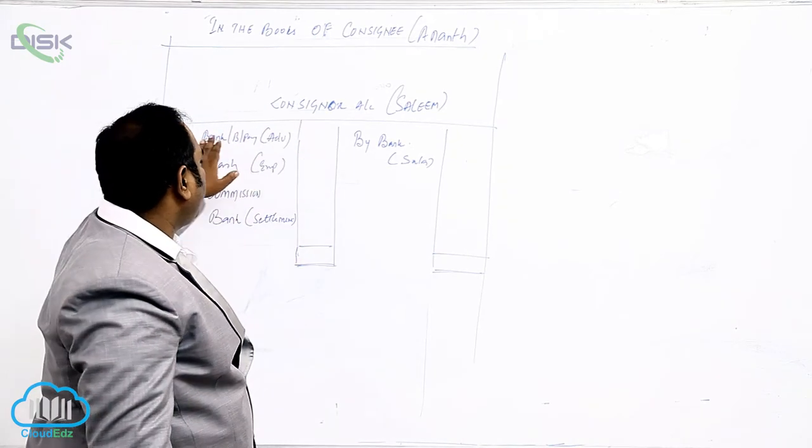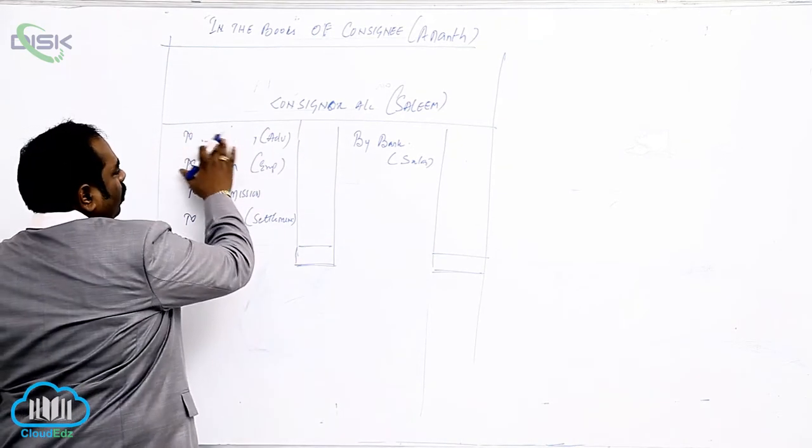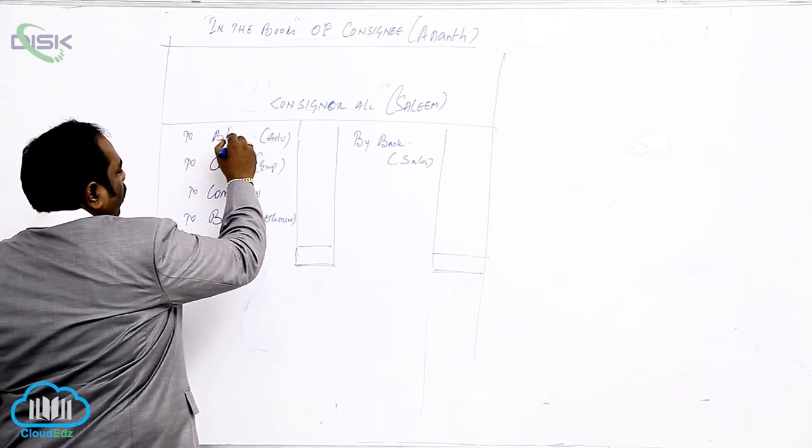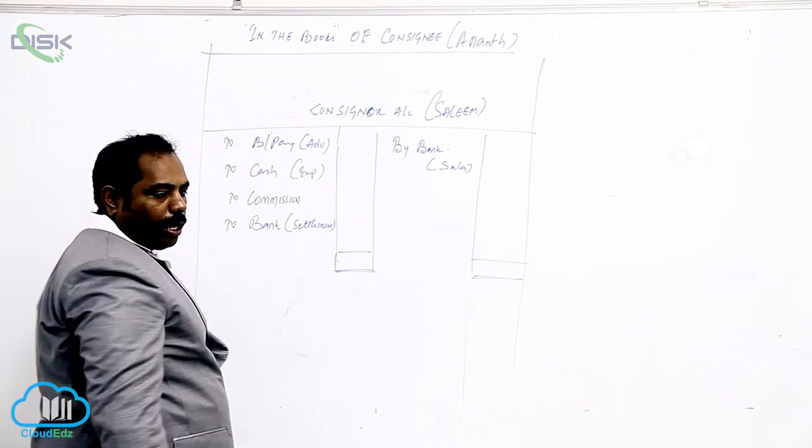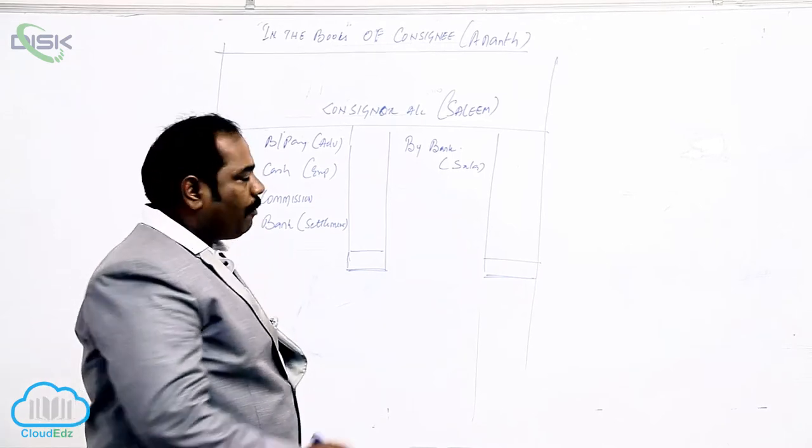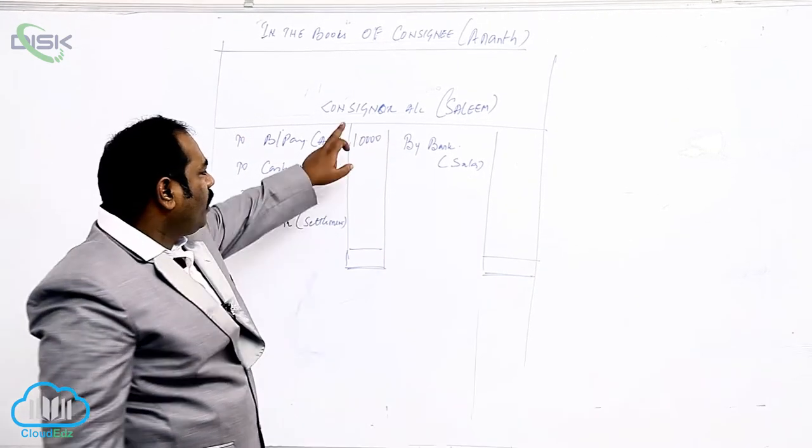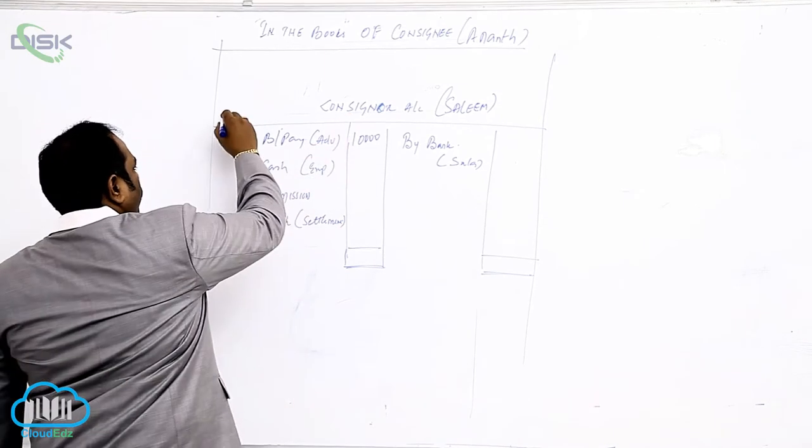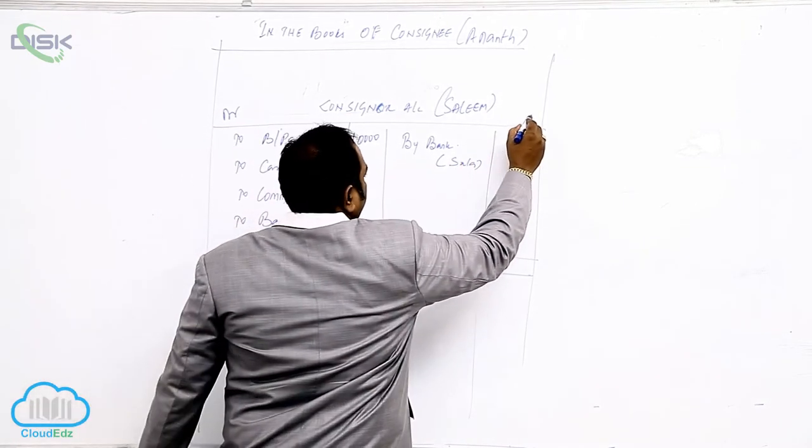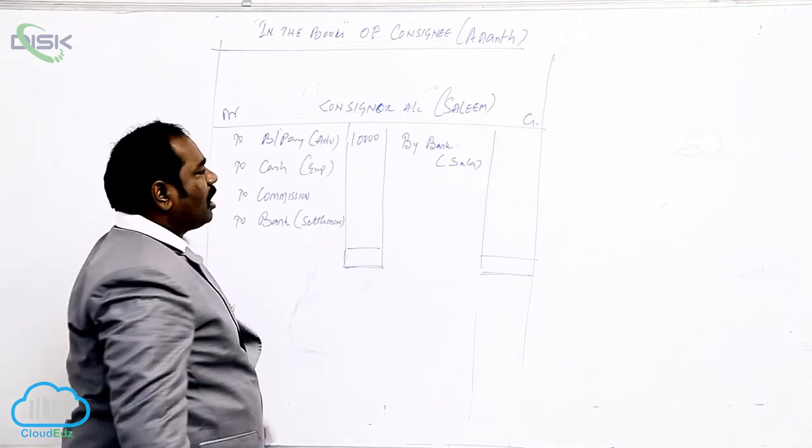Consigner account to bills payable. When we give a bill, debit the receiver, credit what goes out. For advance, bills payable is going out. The advance amount is 10,000. The entry is consigner account is debited. So debit consigner account - so who is the consigner? Salim account. Debit the receiver, credit what goes out? Bills payable.